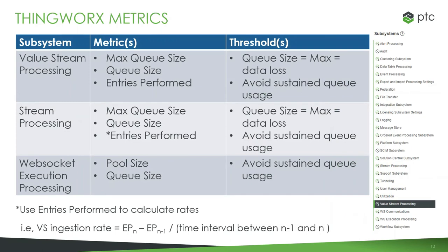We discuss the ThingWorx-based metrics we monitor for system stability and performance. For value stream and stream processing, we monitor their queue size, the max queue size, and the entries performed. Entries performed is a cumulative value, so we use these metrics to calculate the system's ingestion rate. When monitoring the queue size, it is okay to see some occasional spikes in use. However, we want to avoid consistent reliance on the queues, and especially want to avoid using the queue when it's at its max. When a queue size has reached the max queue size, queue entries are probably lost, and for streams this typically means that data is lost.